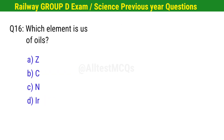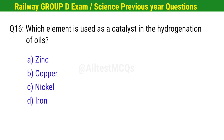Question No. 16. Which element is used as a catalyst in the hydrogenation of oils? Right option is C. Nickel.